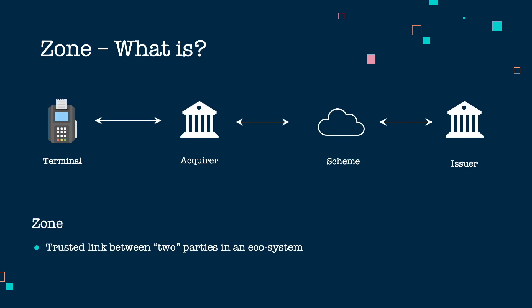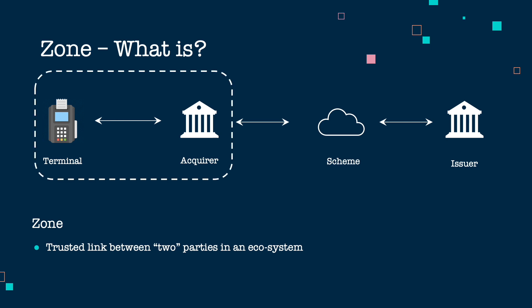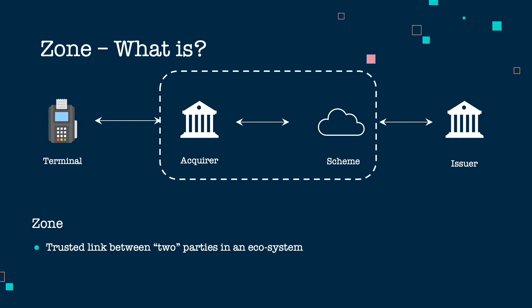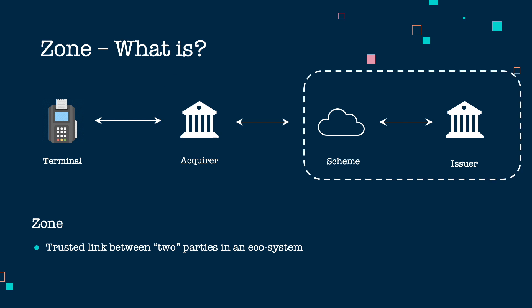An important terminology to cover is 'zone.' In payments environments, there are a lot of parties involved. In a typical transaction flow, there is terminal, terminal to acquirer, acquirer to scheme, and scheme to issuer. A trusted link between any two parties is called a zone. So the terminal and acquirer form a zone, acquirer and scheme form a zone, and scheme and issuer form a zone. We will see the importance of zones in the next section.